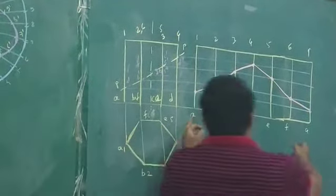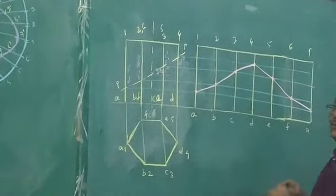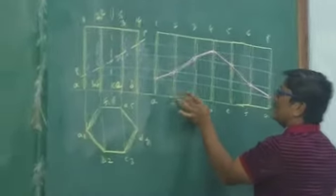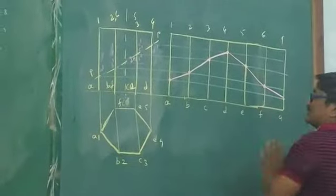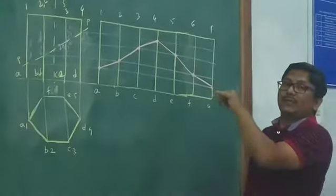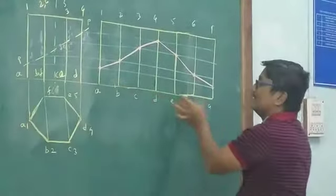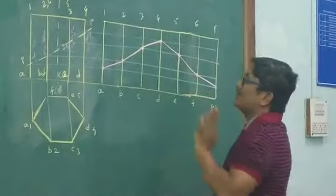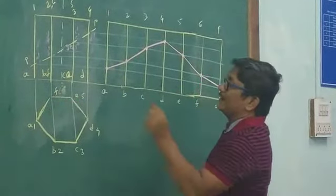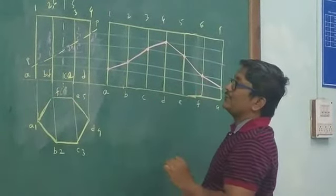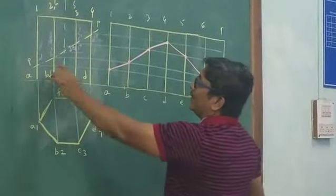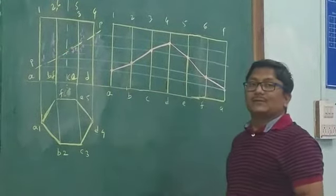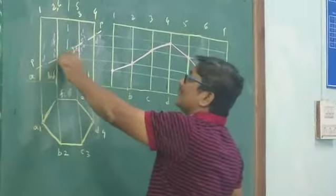This is the perimeter of the base surface. The base length 1, 2, 3, 4, 5, 6 — this is the base perimeter of the base surface. Development is okay. Now the cutting plane — the projections of the cutting plane you have to draw here. The cutting plane is at the mid of the axis, or you can say bisecting the axis, and the angle is 45 degrees.